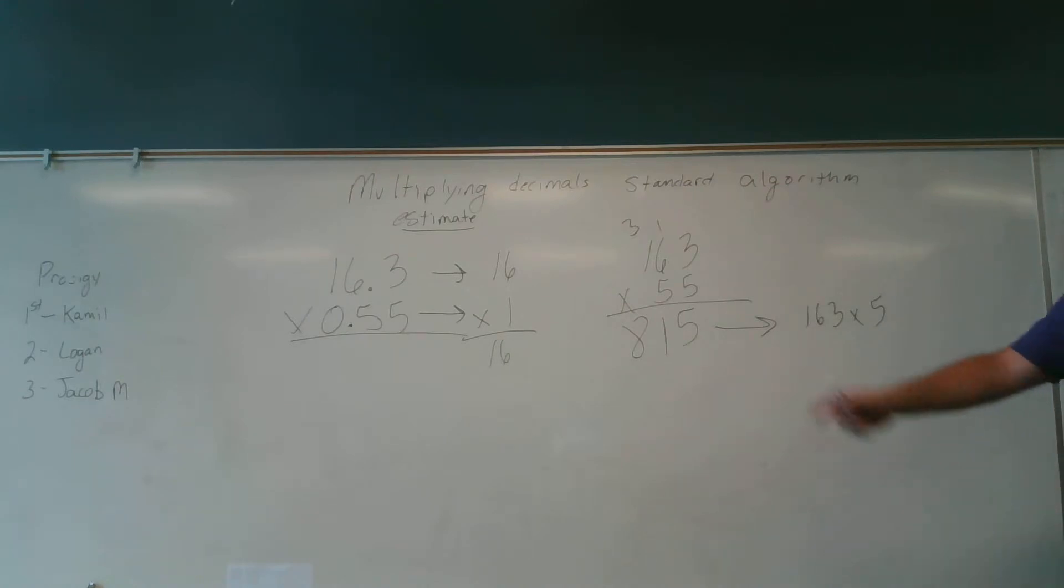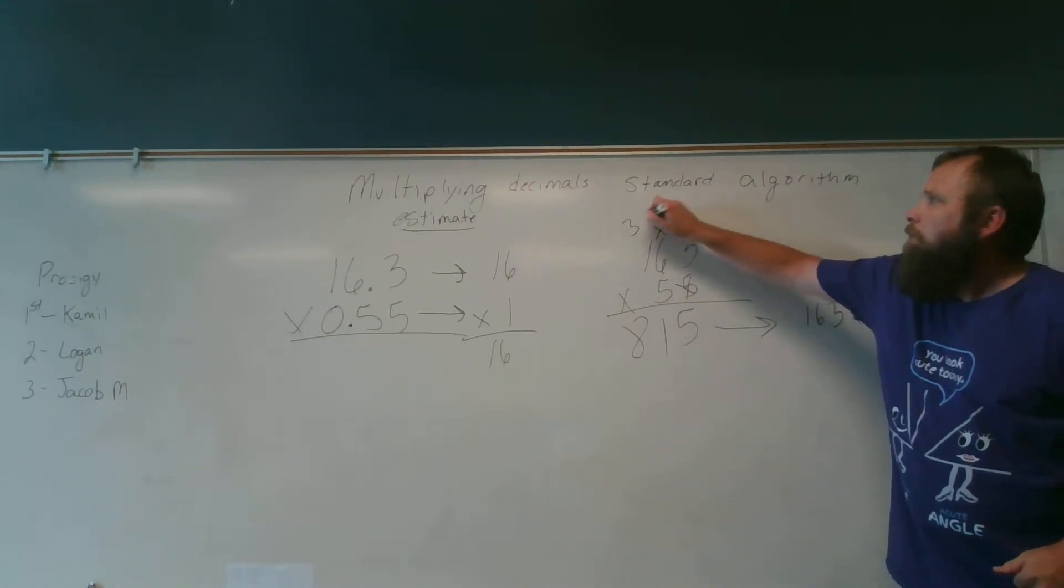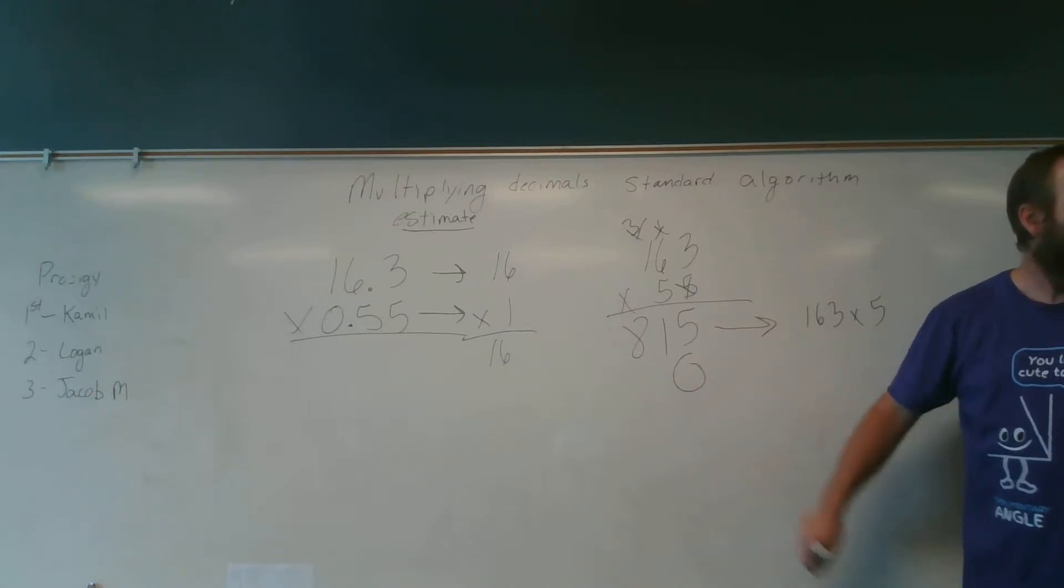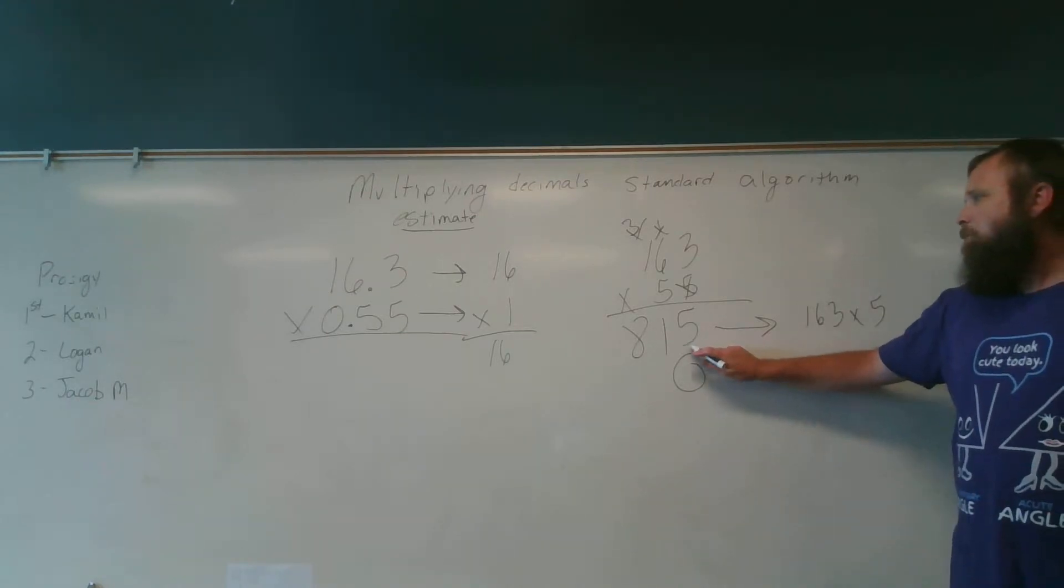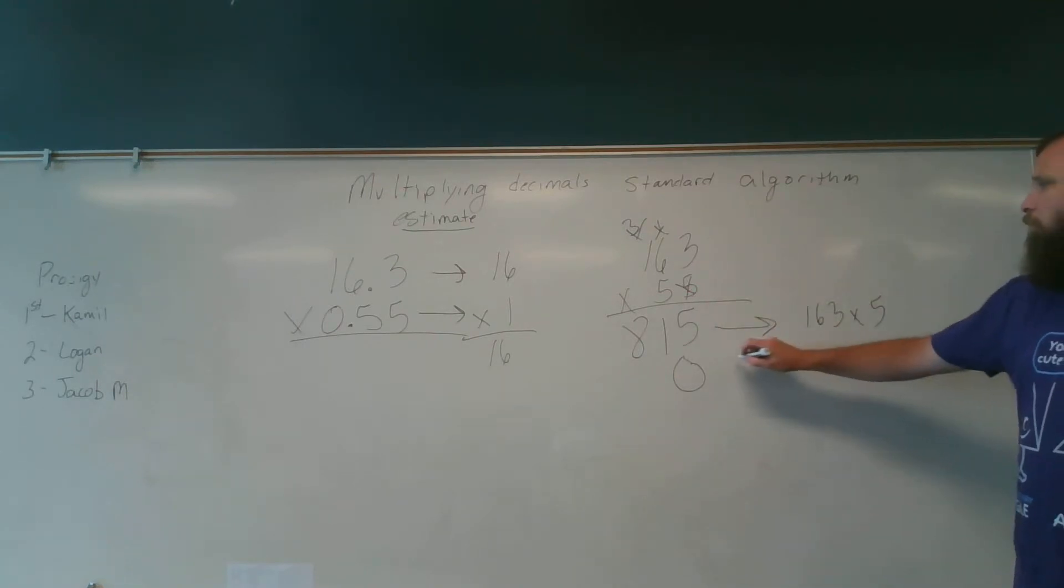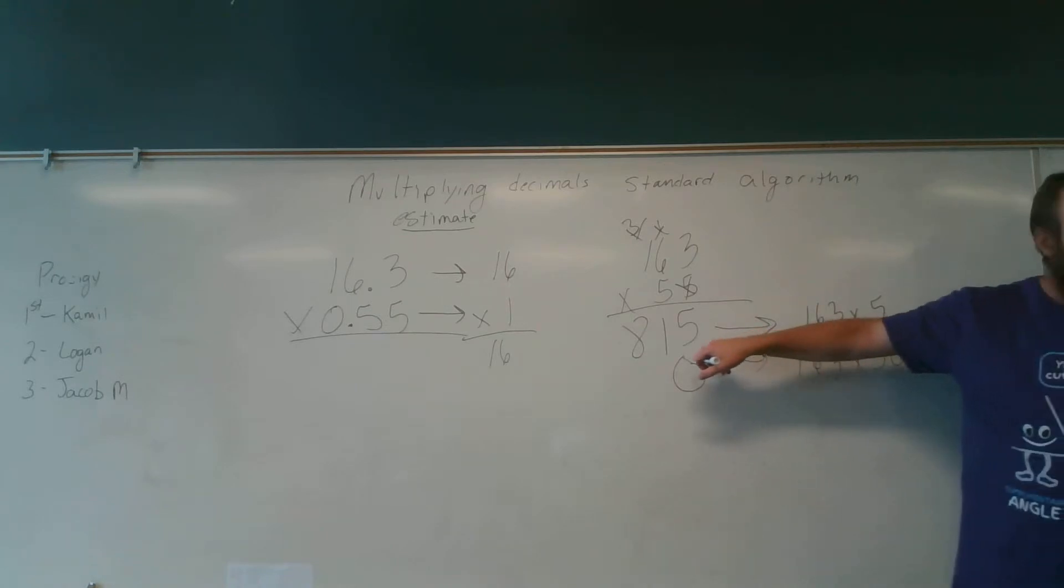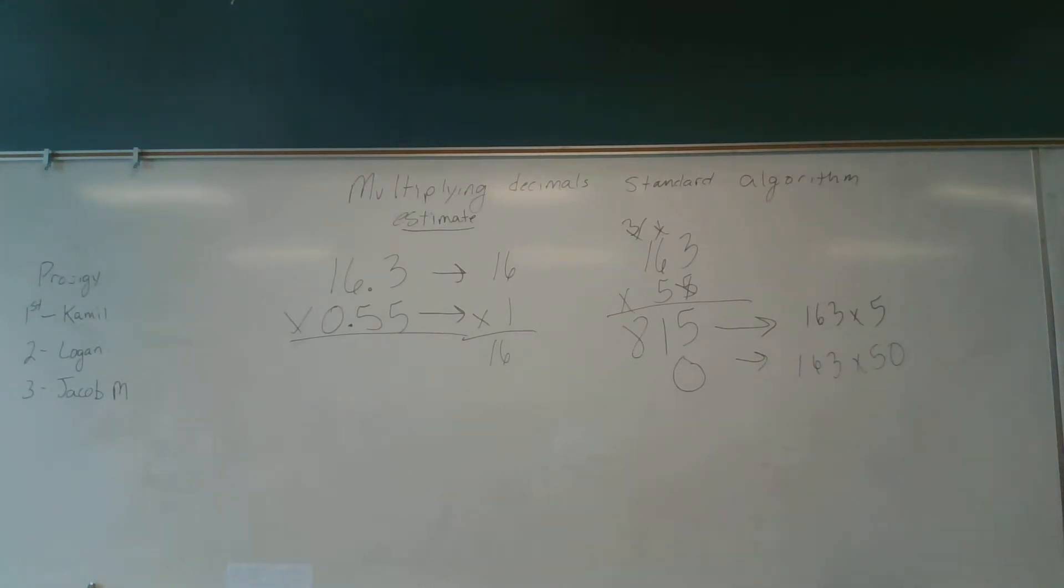All right, so Dylan, I have to multiply by my tens place here. So what do I need to do first? I need to put a 0 in my ones place because I'm multiplying into my tens place. So what I'm doing here Dylan is multiplying 163 times 50, and I already put my 0 from 50 there. All right, so now I'm at the point where I'm multiplying 163 times 5.